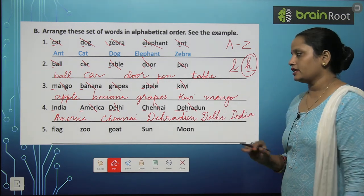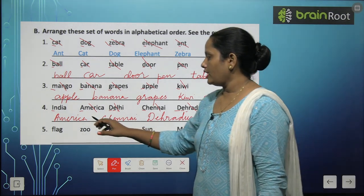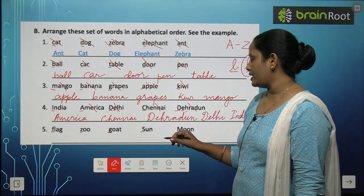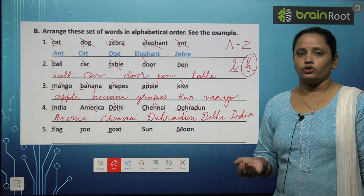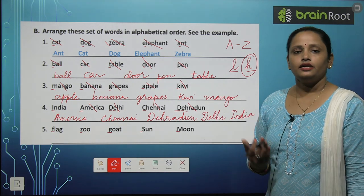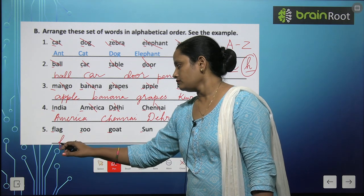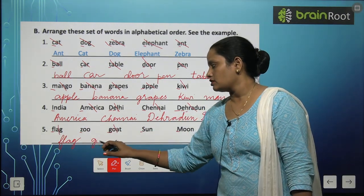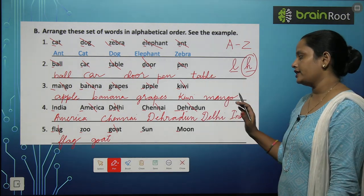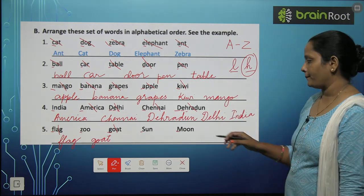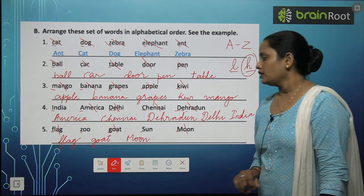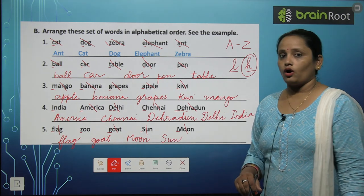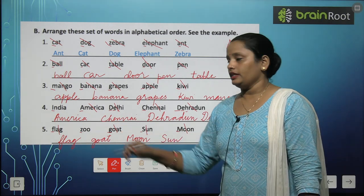Next, question 5: F, Z, G, S, M words — Flag, Goat, Moon, Sun, Zoo. Starting from A: A, B, C, D, E, F — Flag comes first. Then E, F, G — Goat comes next. Then H through M — Moon. Then N through S — Sun. And last is Z — Zoo.